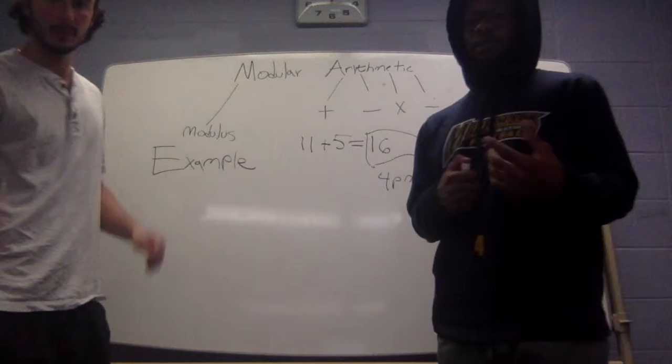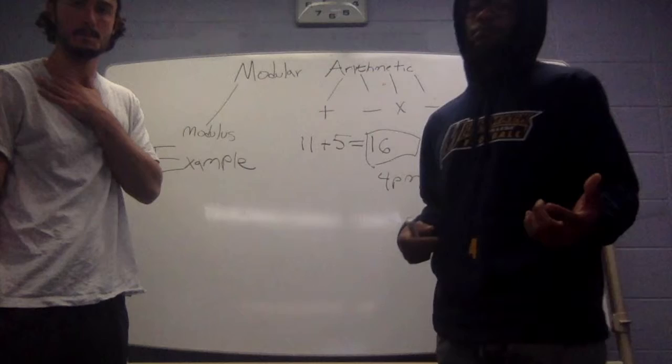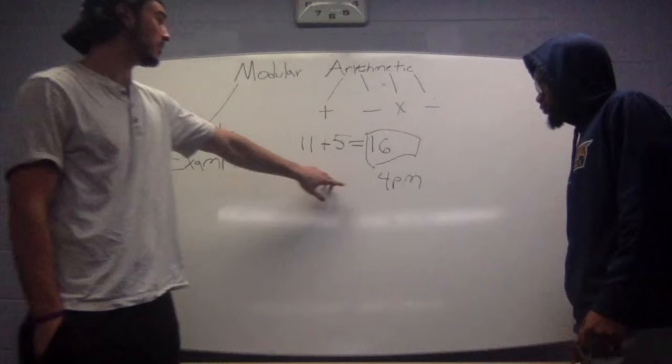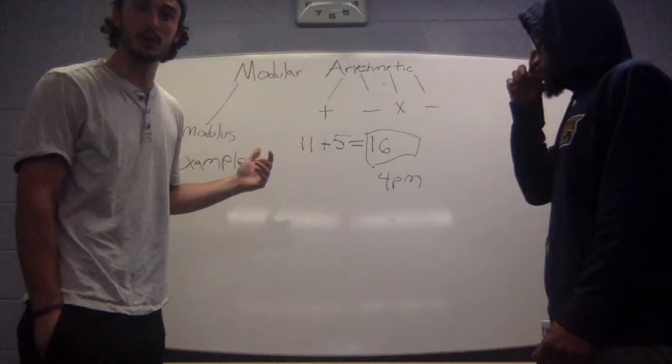So what that means is that after the mod number, in this case 12, all numbers wrap around and start over again. So you have to count again. Now, this explains how Marquis knew that my meeting was at 4pm. Because if the clock is set to mod 12,